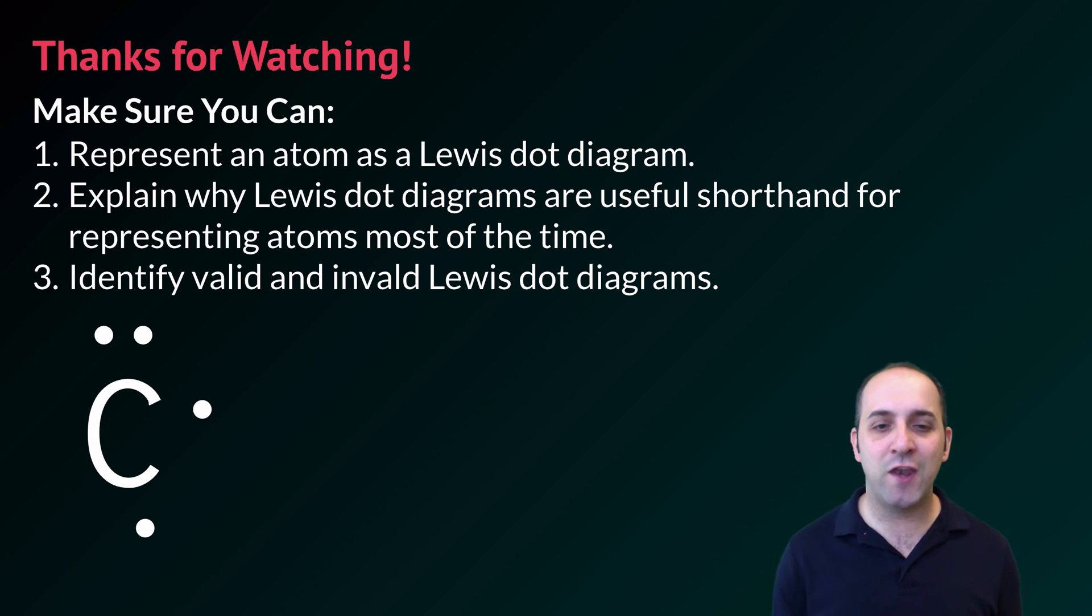Why don't we care about the kernel when considering how atoms bond? Make sure you can identify valid and invalid Lewis dot diagrams, so you don't put down ten dots or more than two dots on a side.